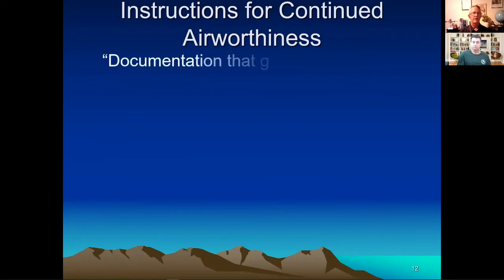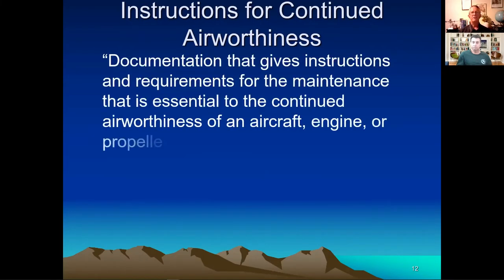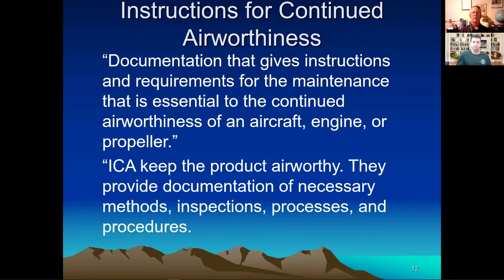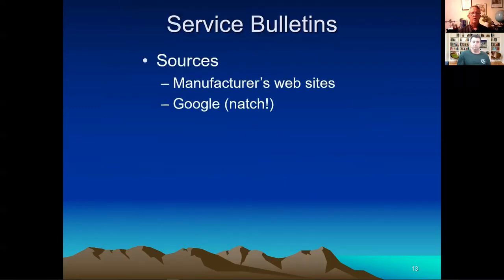The last document type is instructions for continued airworthiness, or ICA. This is documentation that gives instructions and requirements for ongoing maintenance — for the aircraft, engine, propeller, appliances, and so forth. It helps keep the product airworthy. There will be enhanced instructions on various types of maintenance, cleaning products, processes, and procedures — additional information to help you maintain the airworthiness of whatever it is: your aircraft, engine, or propeller.